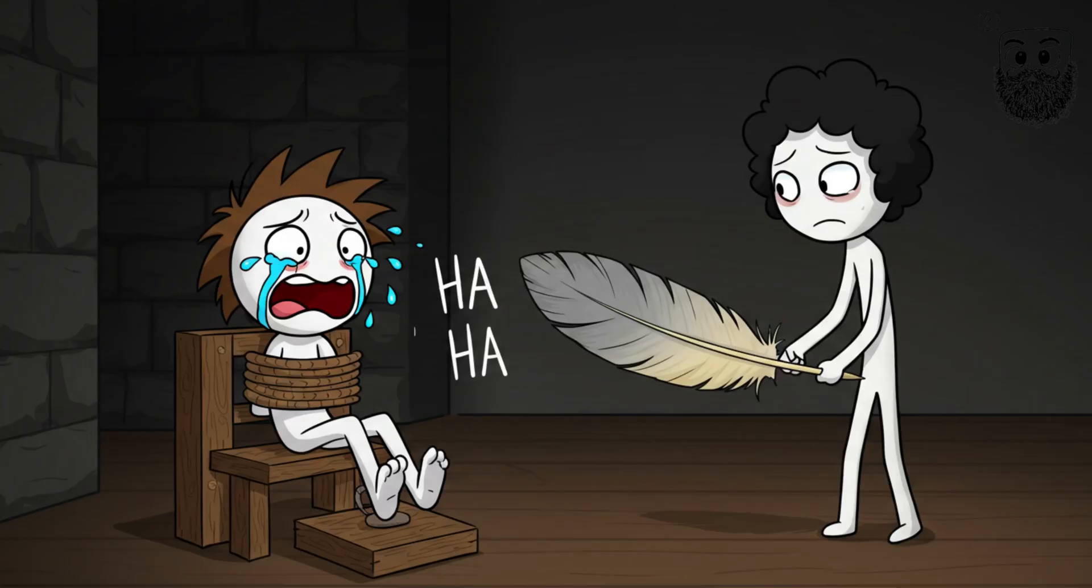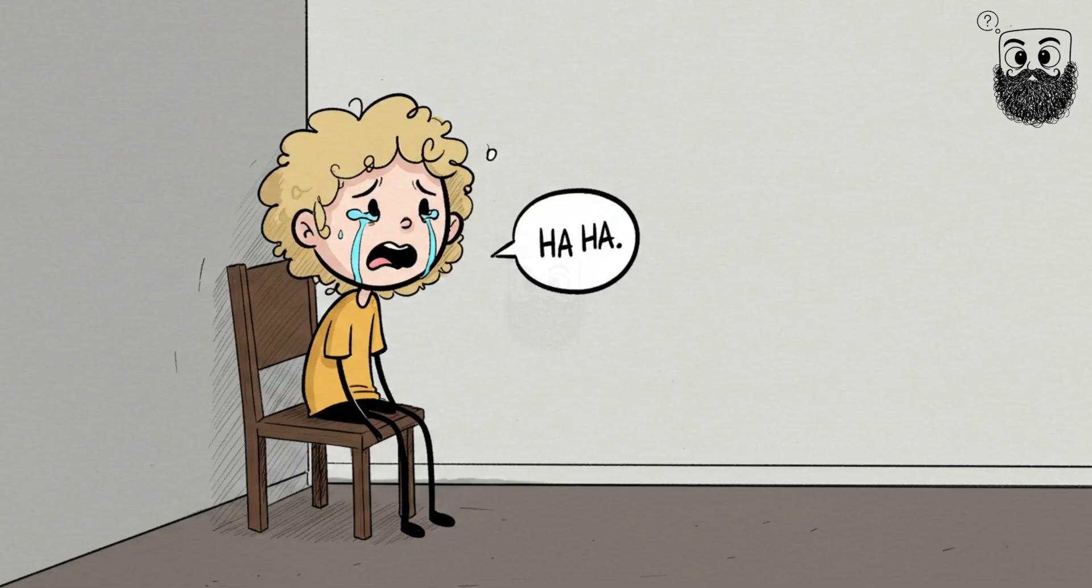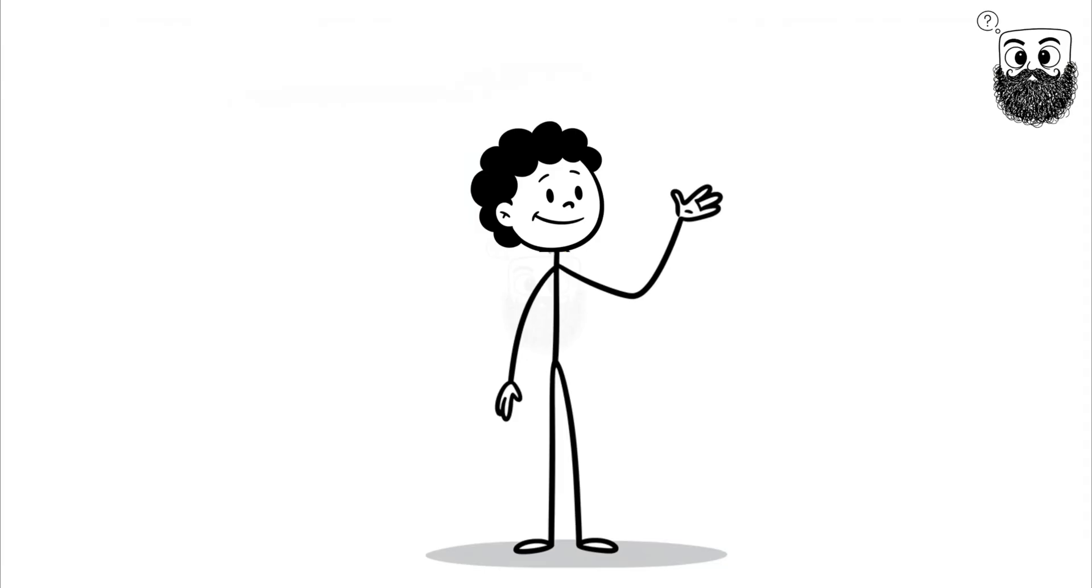Number 7. The Tickle Torture Response. Imagine being strapped to a chair while someone runs their fingers along your ribs. You start laughing uncontrollably, even if you're in serious distress. Your body betrays you with laughter. Scientists still can't fully explain why this happens.